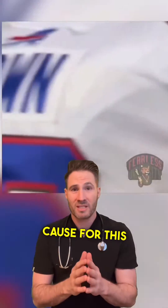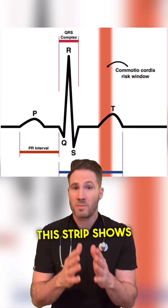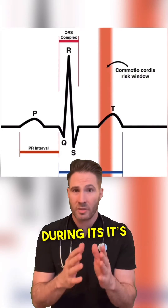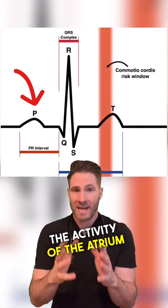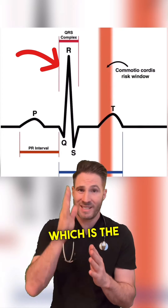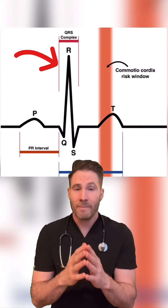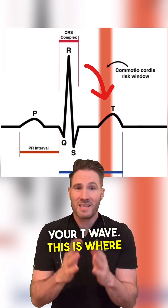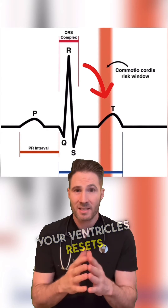The most likely cause for this event is something called commotio cordis. This strip shows the various electrical activity of the heart during a cycle. The P wave is the activity of the atrium contracting. The QRS complex, which is the zigzag line, is the activity of your ventricles. And the last wave there is your T wave.